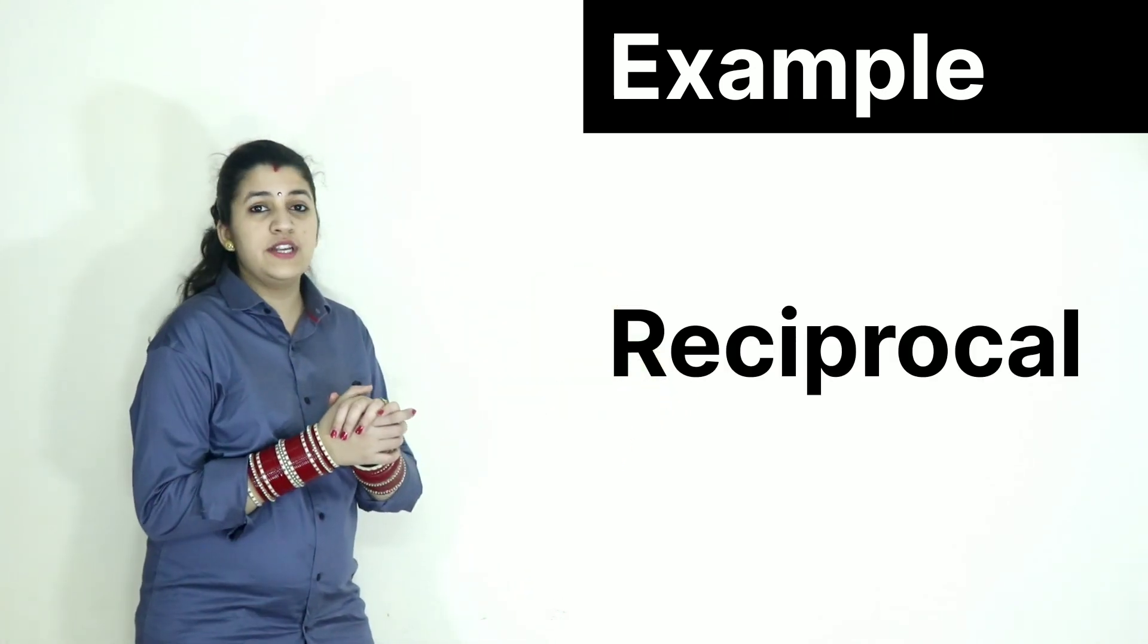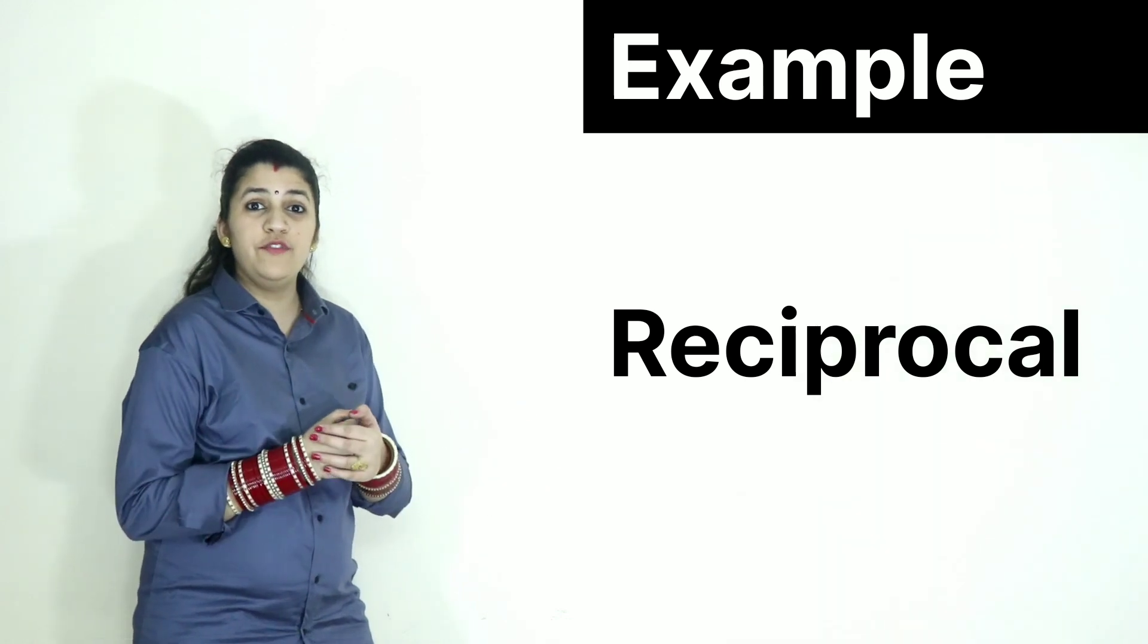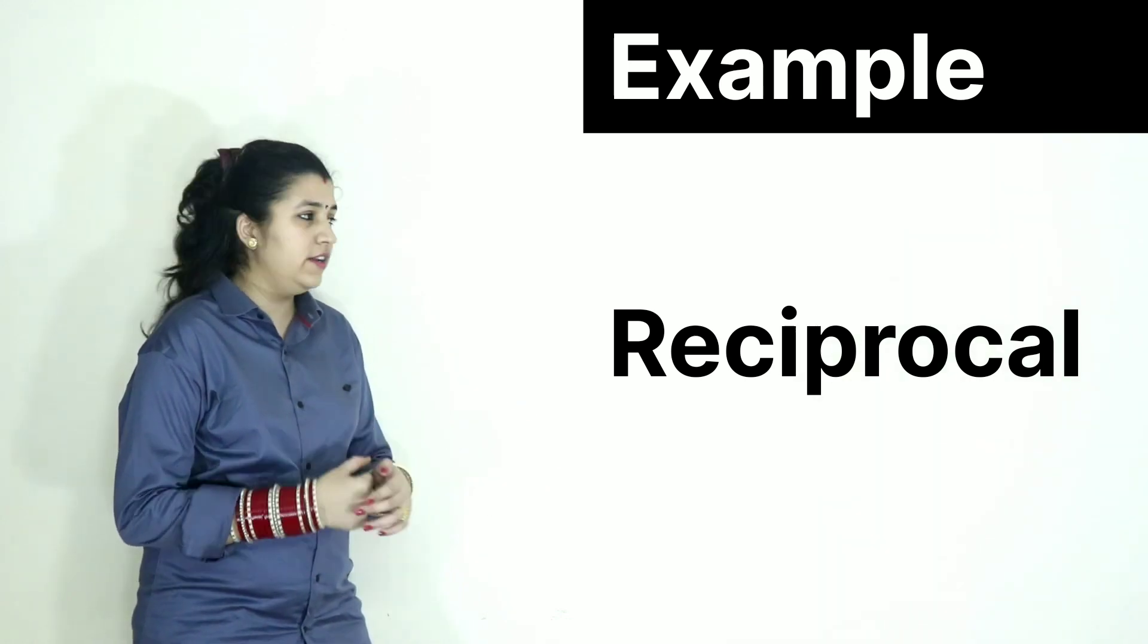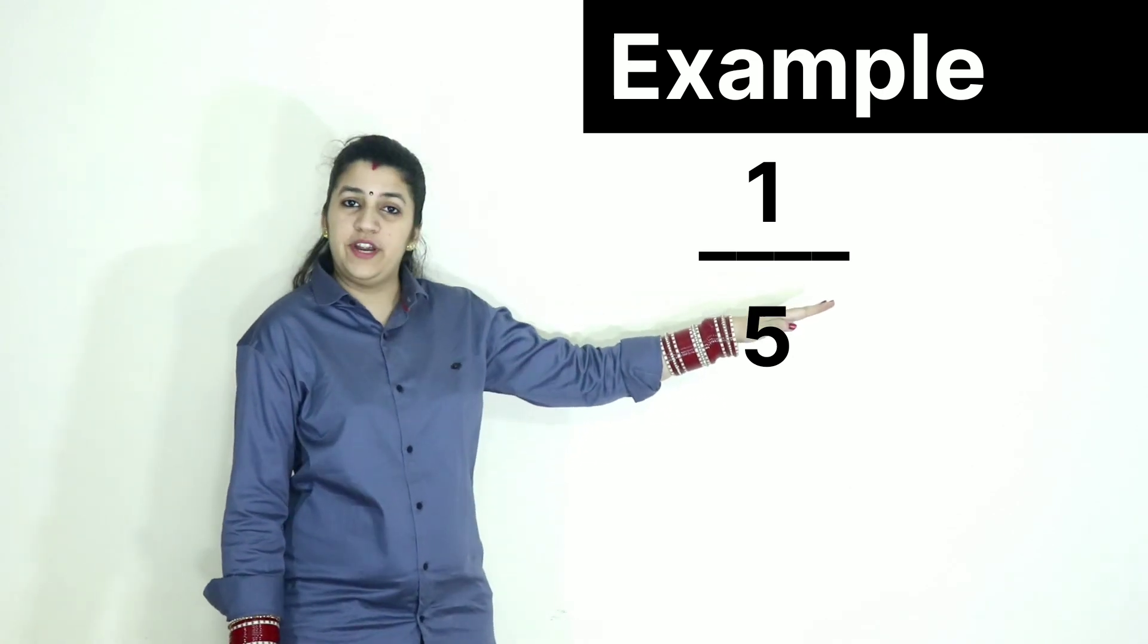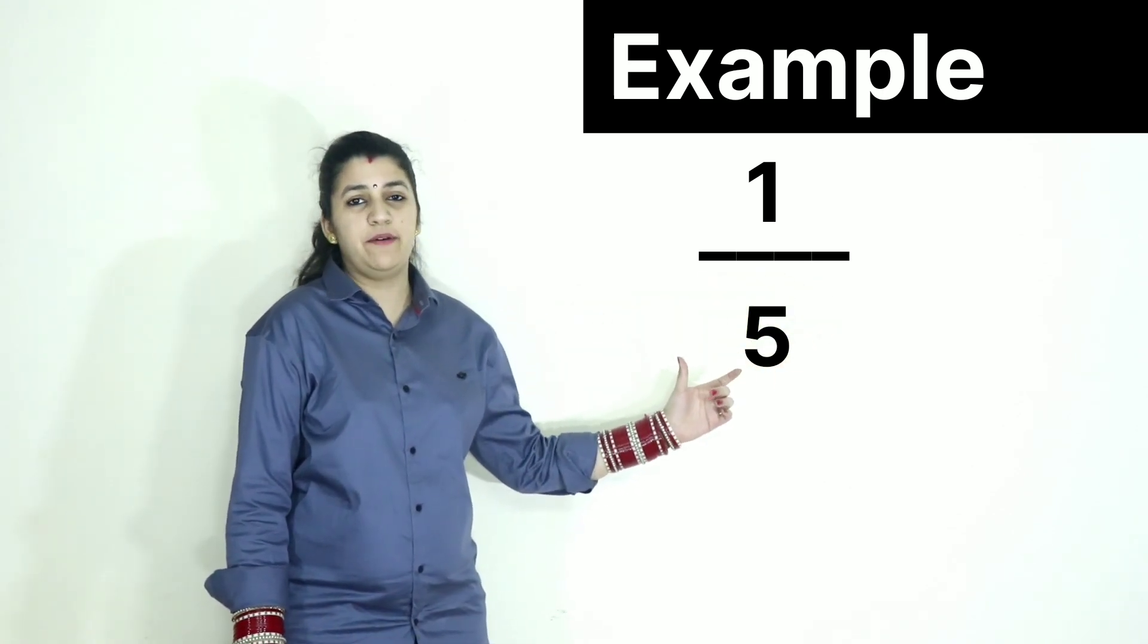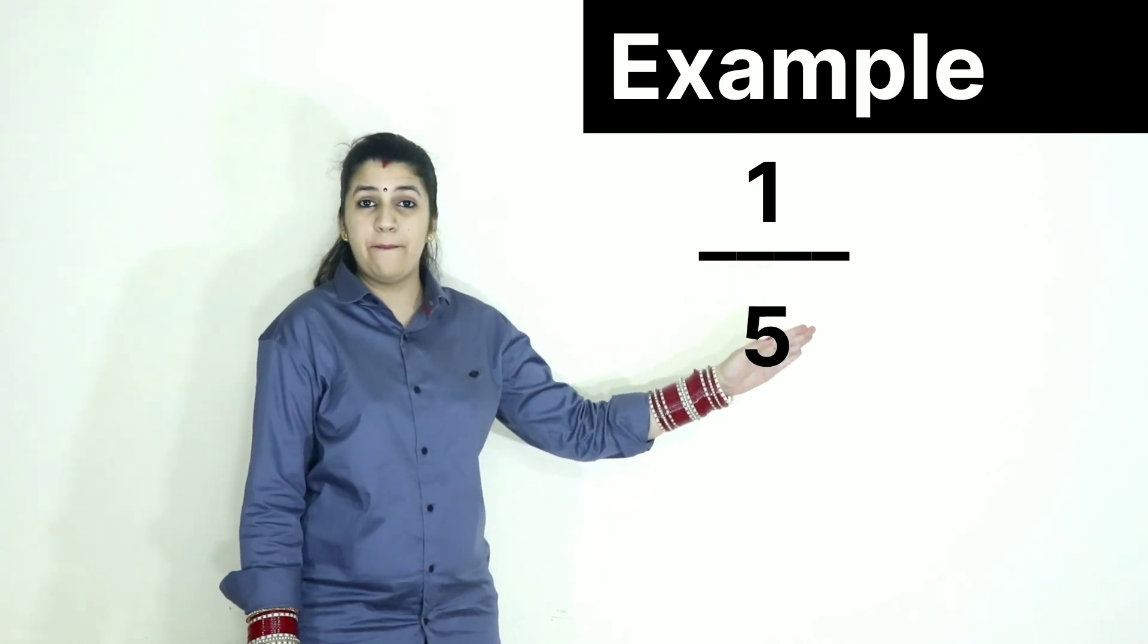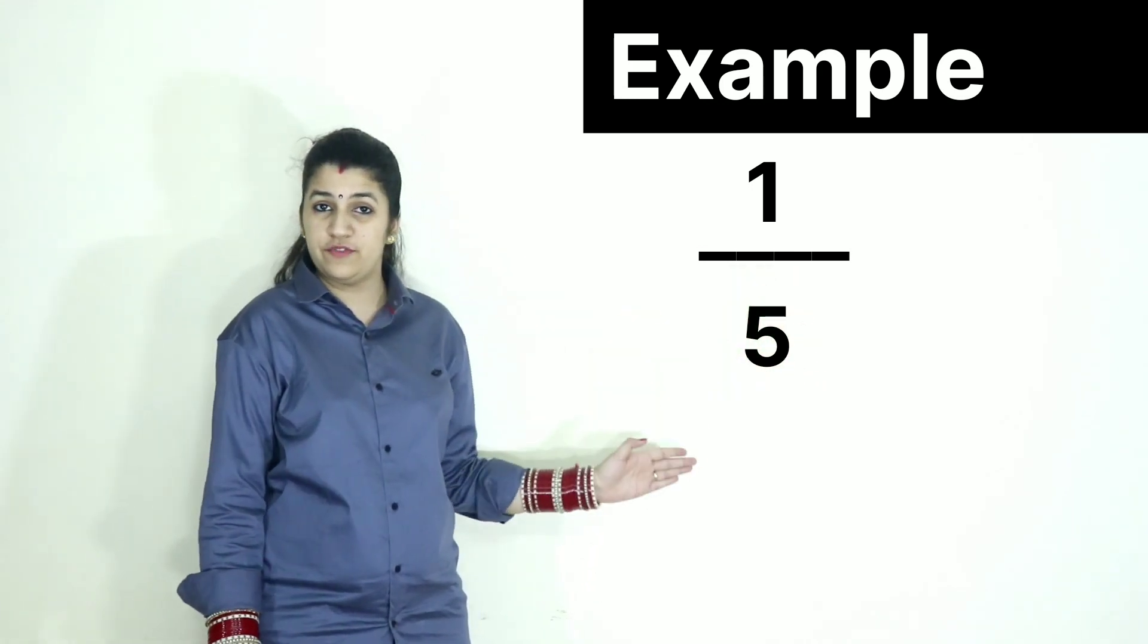Now again, a new concept: reciprocal. What do we have to do in case of reciprocal? 1 in the numerator divided by this base number, that is 5. So 1 upon 5 is the answer for this number.